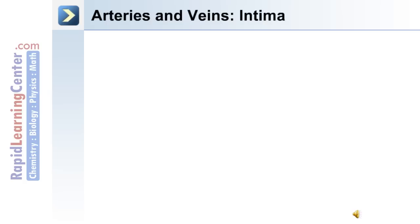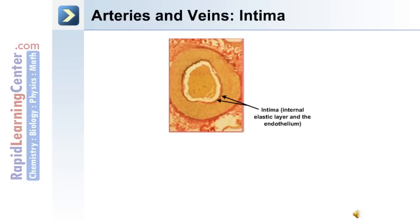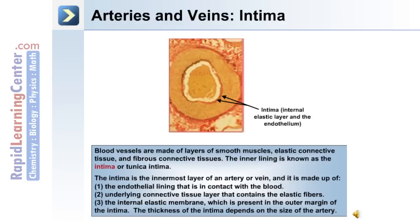Let's discuss each layer of a blood vessel in more detail, beginning with the intima. This is the internal layer that contains the endothelium. The intima is the innermost layer of an artery or vein and it's made up of the following: 1) the endothelial lining in contact with the blood itself, 2) an underlying connective tissue layer that contains elastic fibers, and 3) the internal elastic membrane, which is present at the outer margin of the intima. The thickness of the intima depends on the size of the artery.